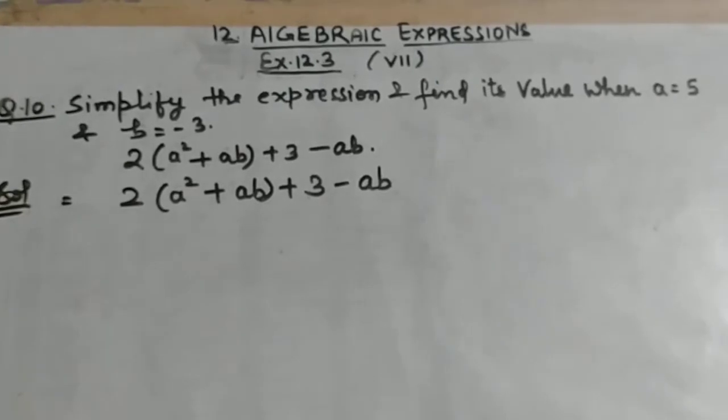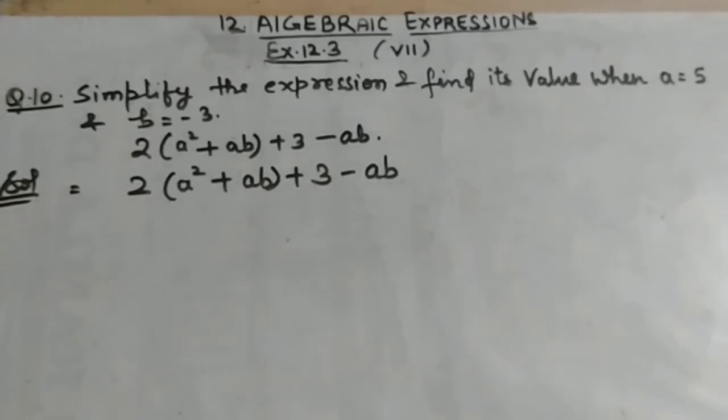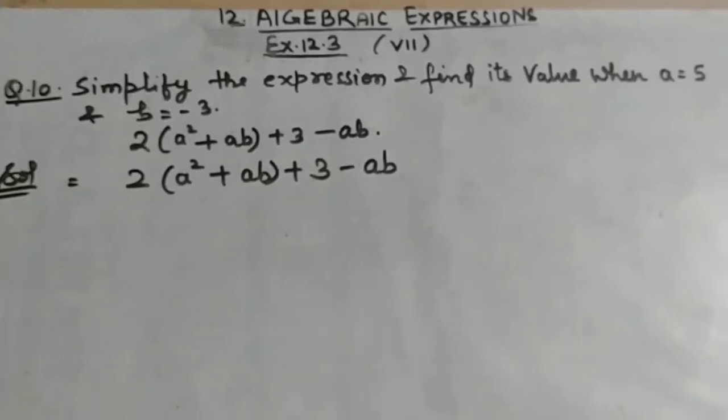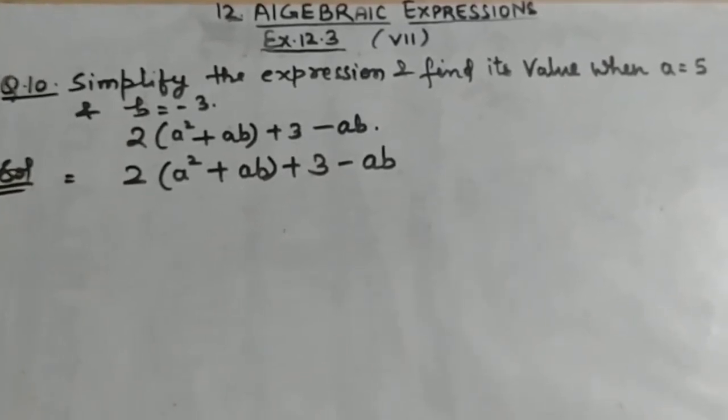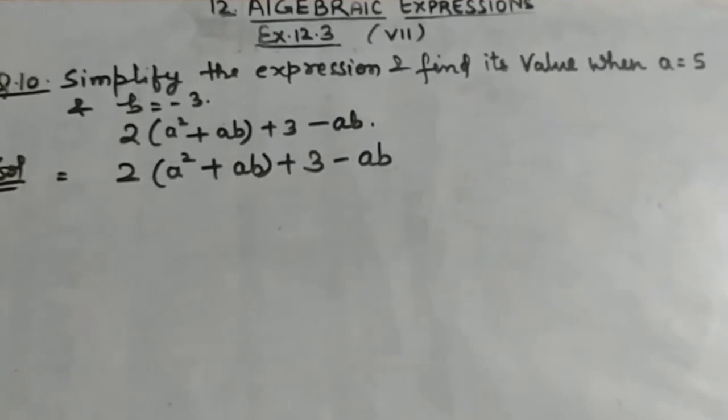Question is simplify the expression and find its value when a equals 5 and b equals minus 3. The given expression is 2(a² + ab) + 3 - ab.